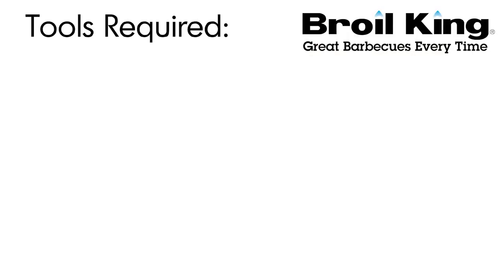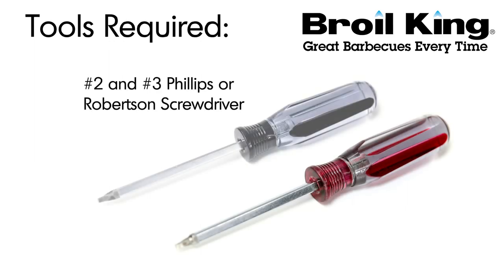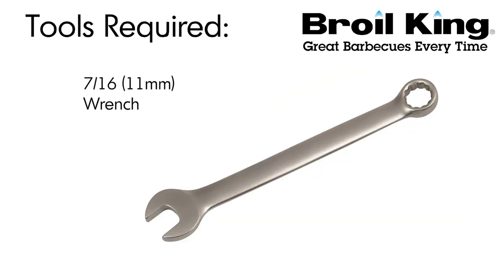You will need the following tools to assemble your Broil King grill: a number 2 and number 3 Phillips or Robertson screwdriver, and a 7/16th wrench.